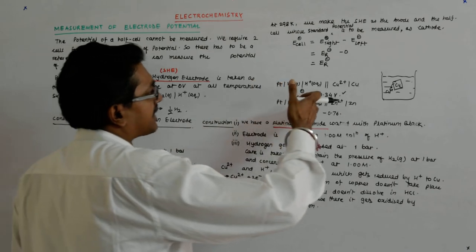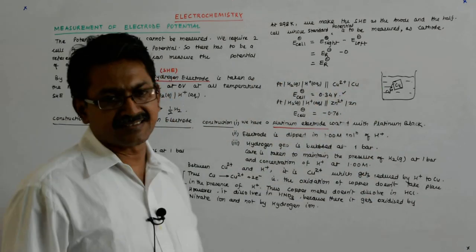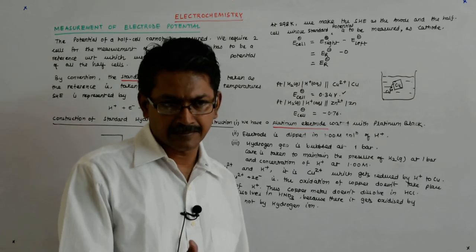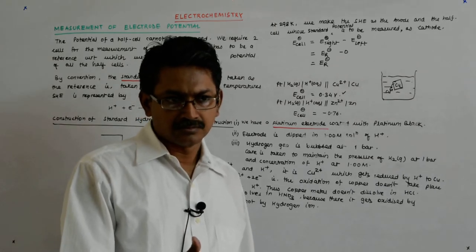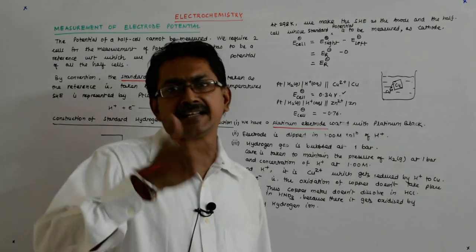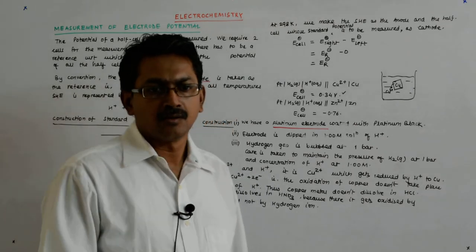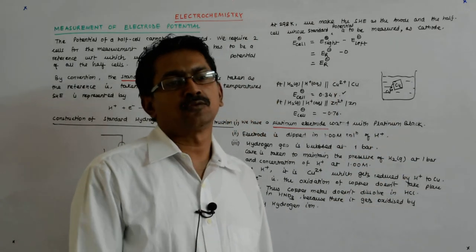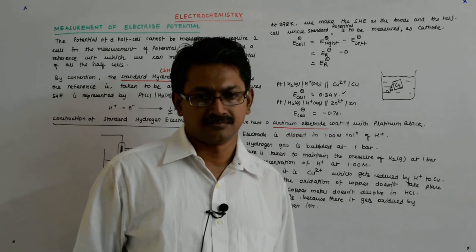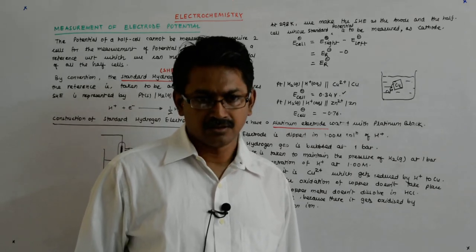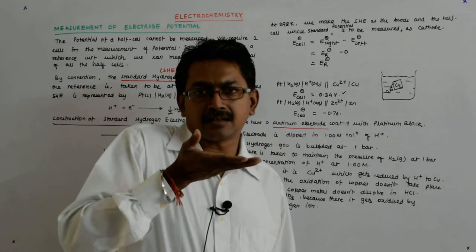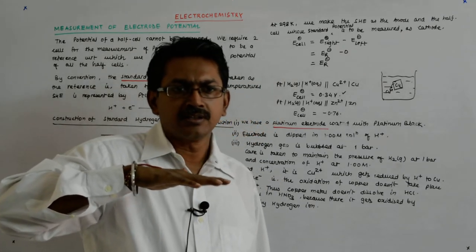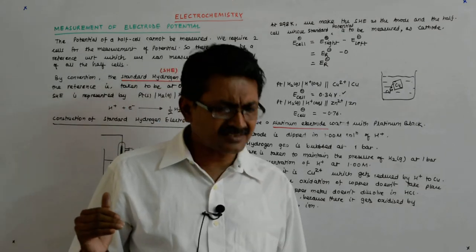We keep the reduction on the right-hand side by convention. Since we are dealing with reduction potentials, whatever you keep on the right must have a greater value than whatever you keep on the left, because whatever has the higher reduction potential will be reduced, and the other will be oxidized.